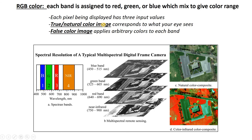If we assign pixels collected in the blue wavelength the display color blue, pixels collected in the red wavelength the display color red, and green wavelengths the display color green, then we get what's called a true color image — blue assigned to blue, green to green, and red to red. However, we don't have to do that. We can assign the band collected in the blue wavelength and make it orange, or the green band to purple. That would give us what's called a false color image.